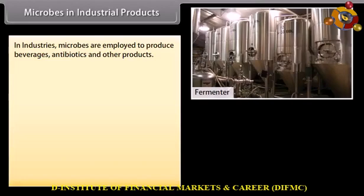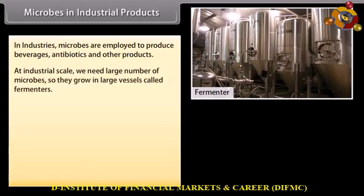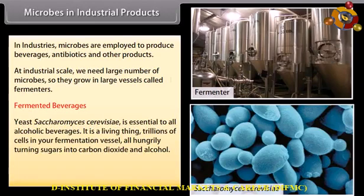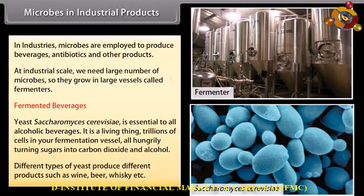Microbes in industrial products. In industries, microbes are employed to produce beverages, antibiotics, and other products. At industrial scale, we need a large number of microbes, so they grow in large vessels called fermentors. Fermented beverages: Saccharomyces cerevisiae is essential to all alcoholic beverages. It is a living thing — trillions of cells in your fermentation vessel, all hungrily turning sugars into carbon dioxide and alcohol. Different types of yeast produce different products such as wine, beer, whiskey, etc.